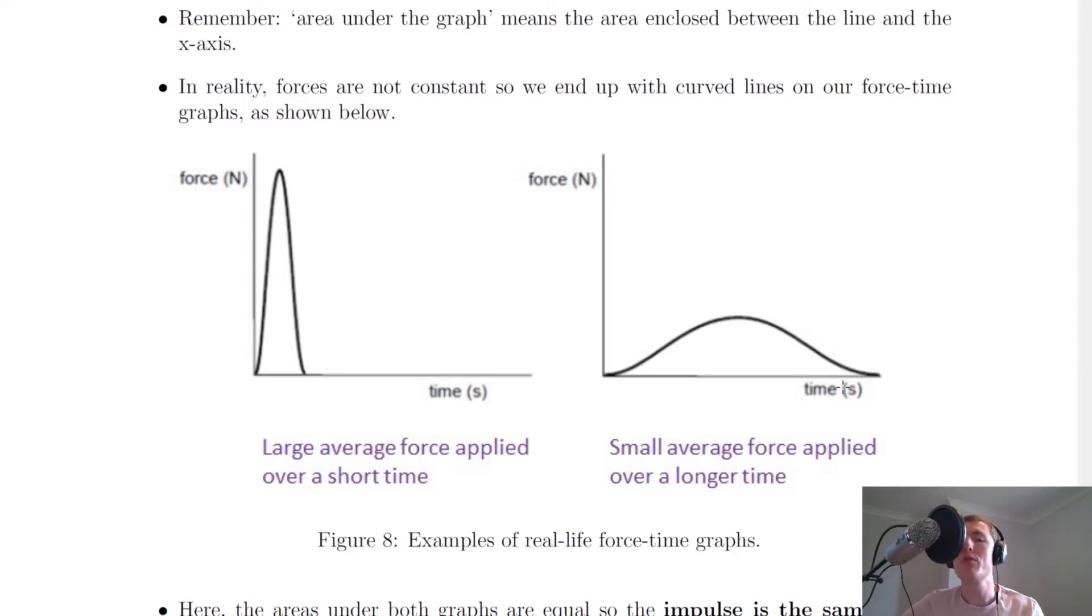If you were to measure the force between two objects over a short time in a lab, you would get force-time graphs that look like this with curved lines. In this case we've got a large average force applied over a short time, whereas in this one we've got a small average force applied over a longer time.